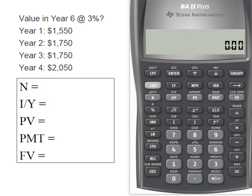Hey everybody, it's Professor Williams here with some uneven cash flows that we want to know what their future value is. We want to know what's the value in year six at three percent interest if we make deposits of $1,550, $1,750, another $1,750, and then $2,050. I want to know at the end of year six what's going to be the future value of that series of cash flows.